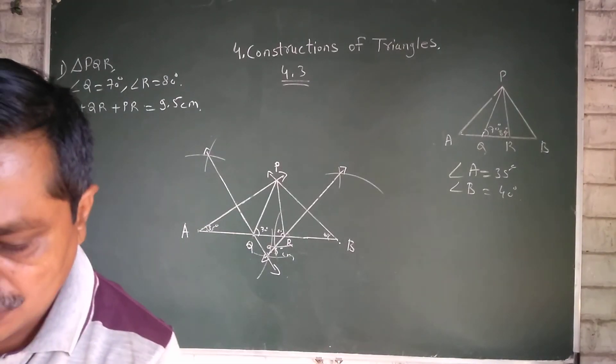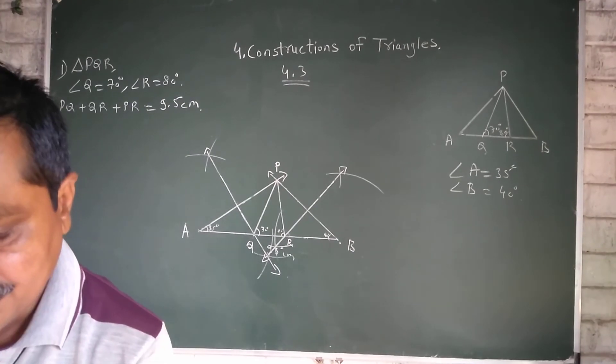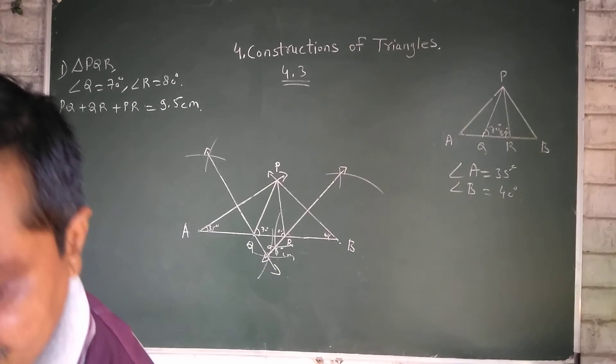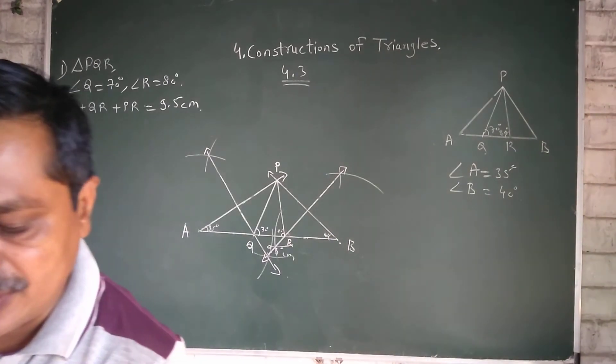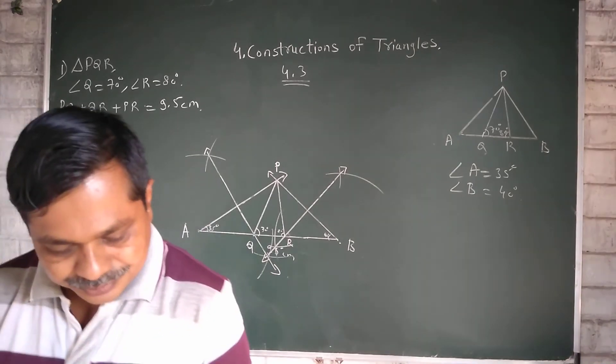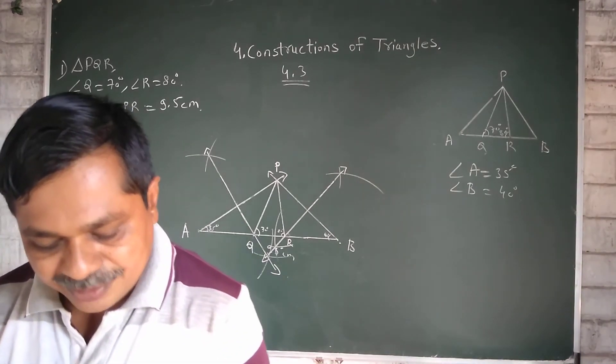Now one second example we will take. In triangle XYZ, angle Y is 58 degree, angle X is 46 degree, the perimeter of the triangle is given 10.5 cm.